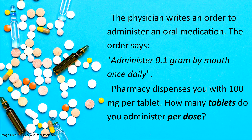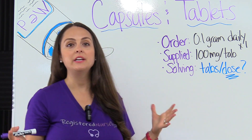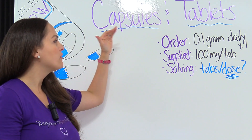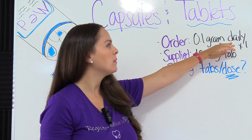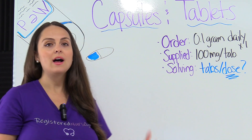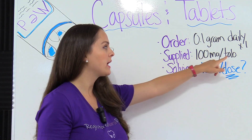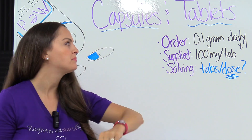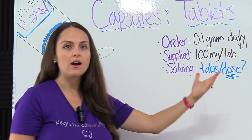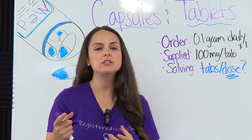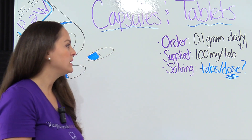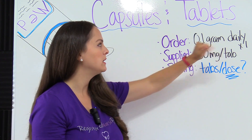Our first problem says the physician writes an order to administer an oral medication. The order says administer 0.1 gram by mouth once daily. Pharmacy dispenses you with 100 milligrams per tablet. How many tablets do you administer per dose? So the most important information we need: the doctor ordered 0.1 gram once daily, pharmacy supplied 100 milligrams per tablet, and we need to figure out how many tablets to give with each dose.